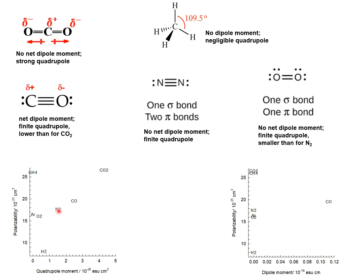We also note that the quadrupole moment of nitrogen is about a factor four higher than that of oxygen. Of these gas molecules, only carbon monoxide has a dipole moment.